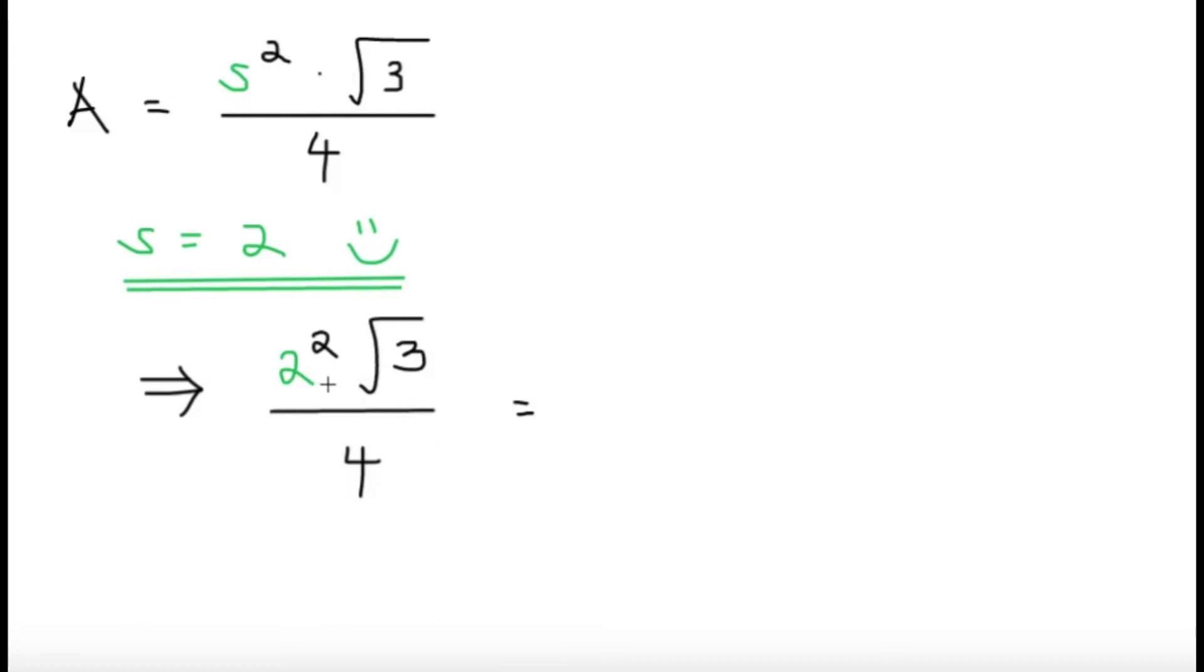Now 2 squared is just 4. So again, we can still cancel these two values. And then same, we're just going to end up with square root of 3. And just don't forget the unit of square cm.